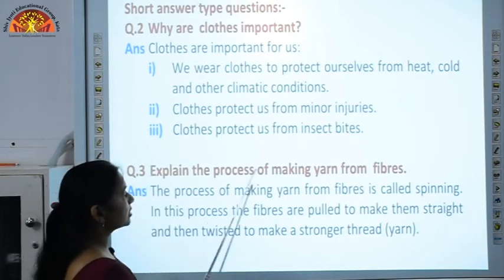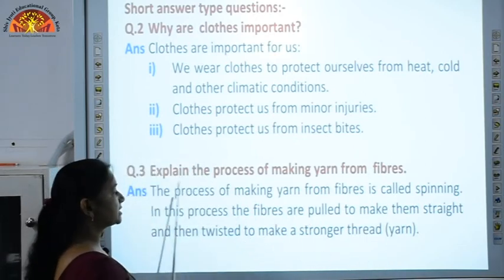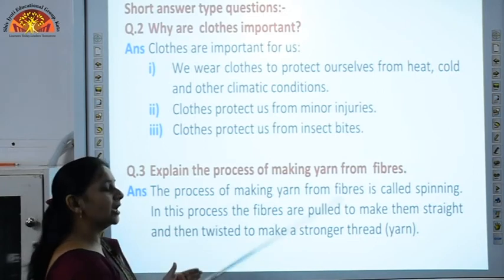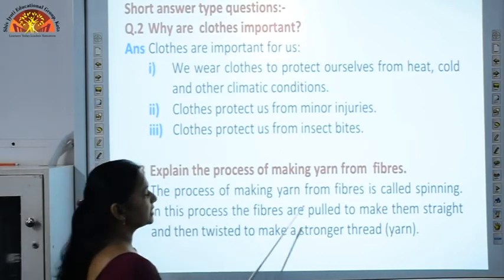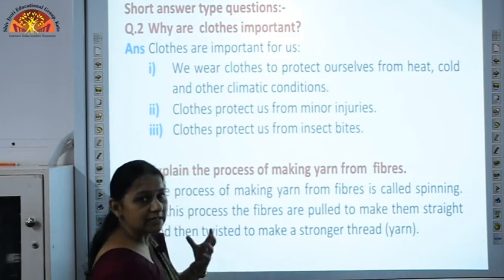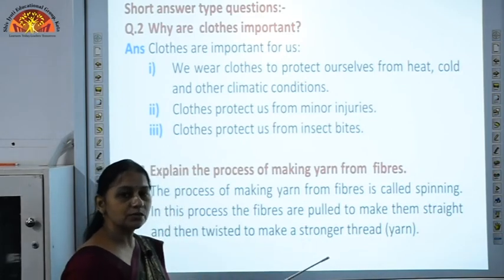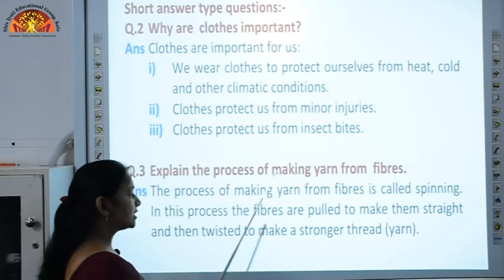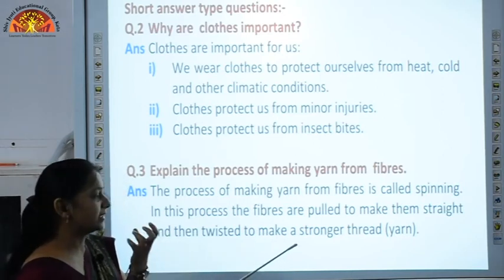The next question: explain the process of making yarn from fibers. The process of making yarn from fibers is called spinning. Spinning is the process by which we make yarn from fibers obtained from plants or animals. In this process, the fibers are pulled to make them straight and then twisted to make a stronger thread. Yarn may be made using simple devices like charkha or takli, but nowadays spinning machines are used in which the fibers are pulled out and twisted to make strong threads or yarns.